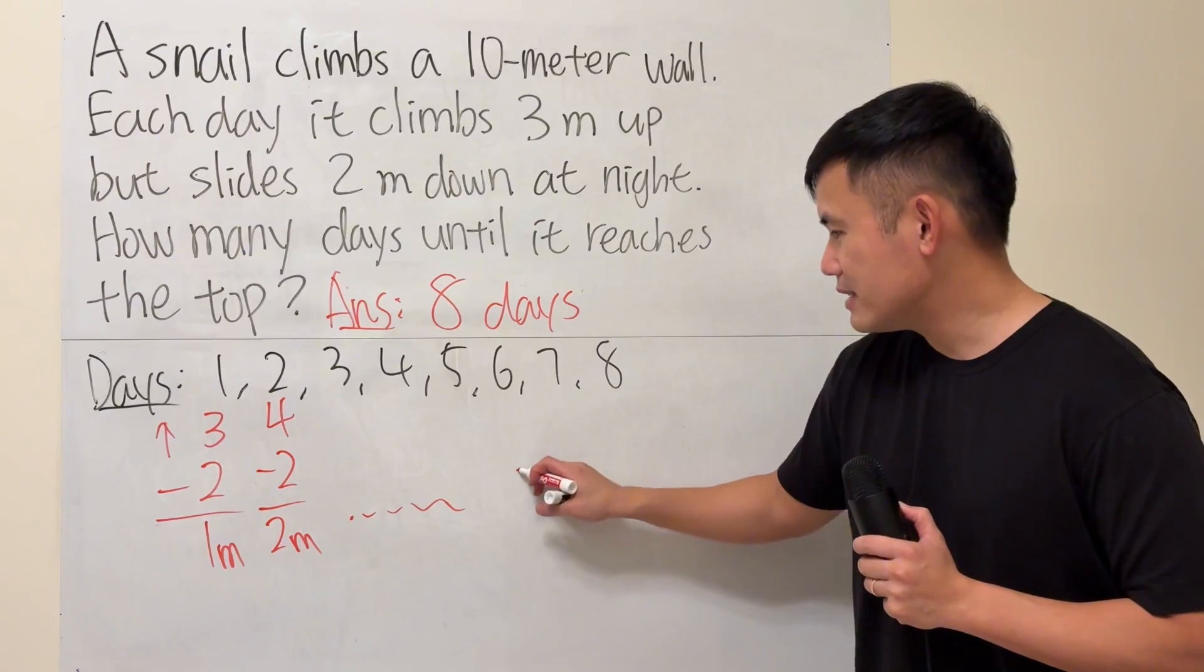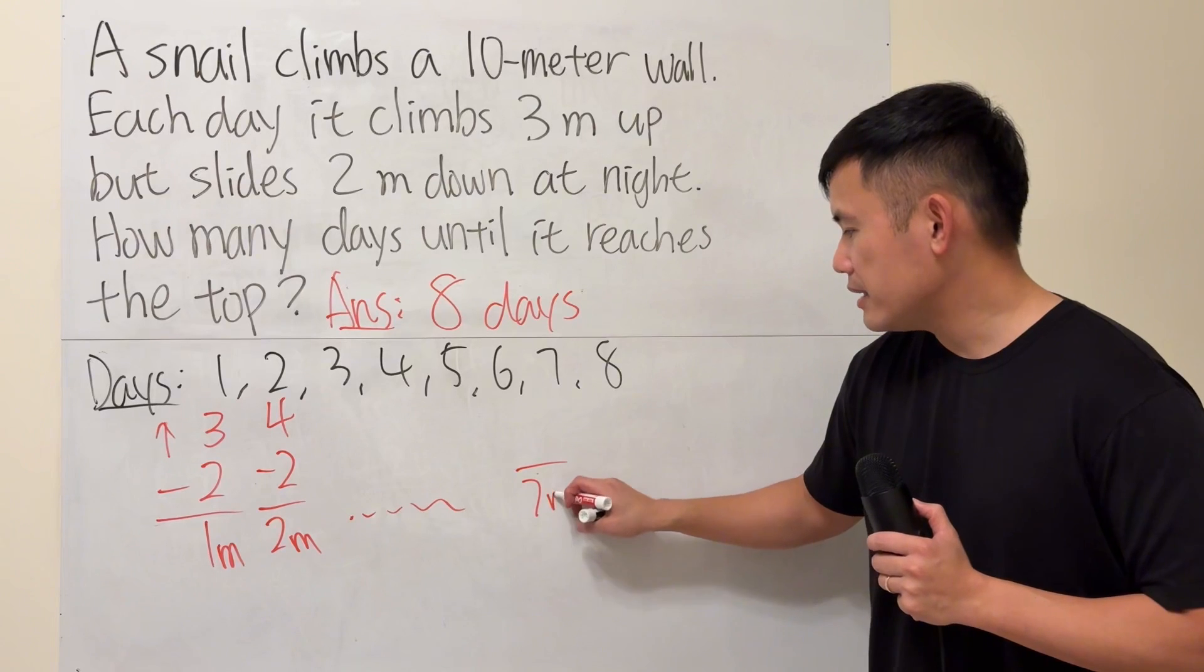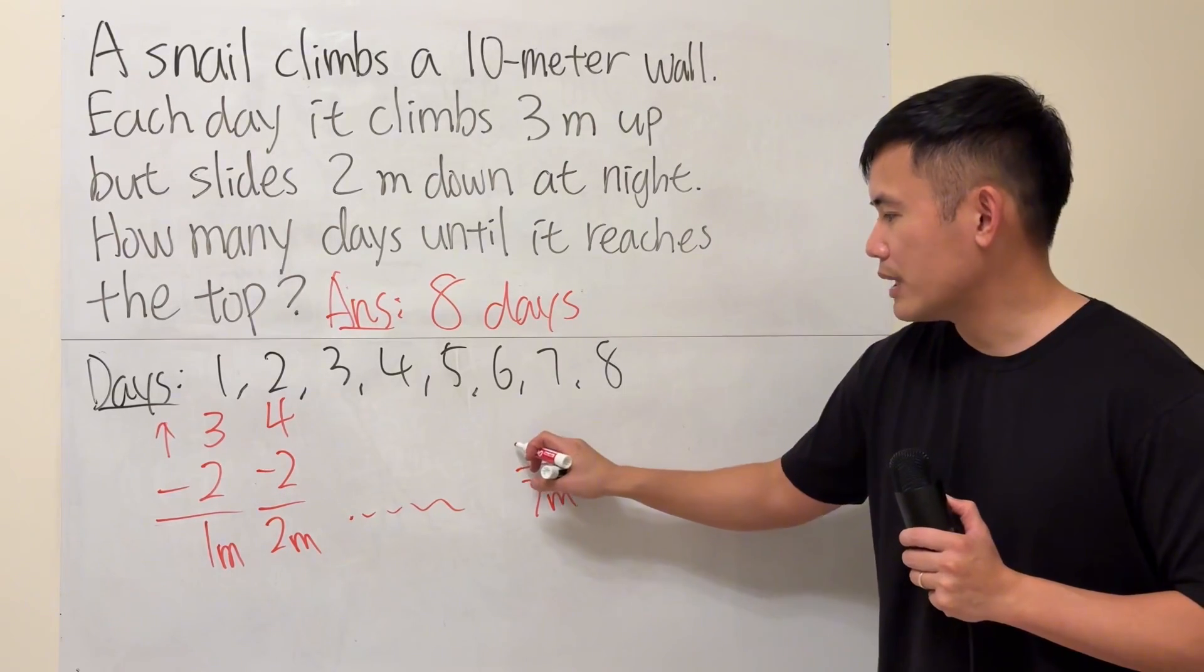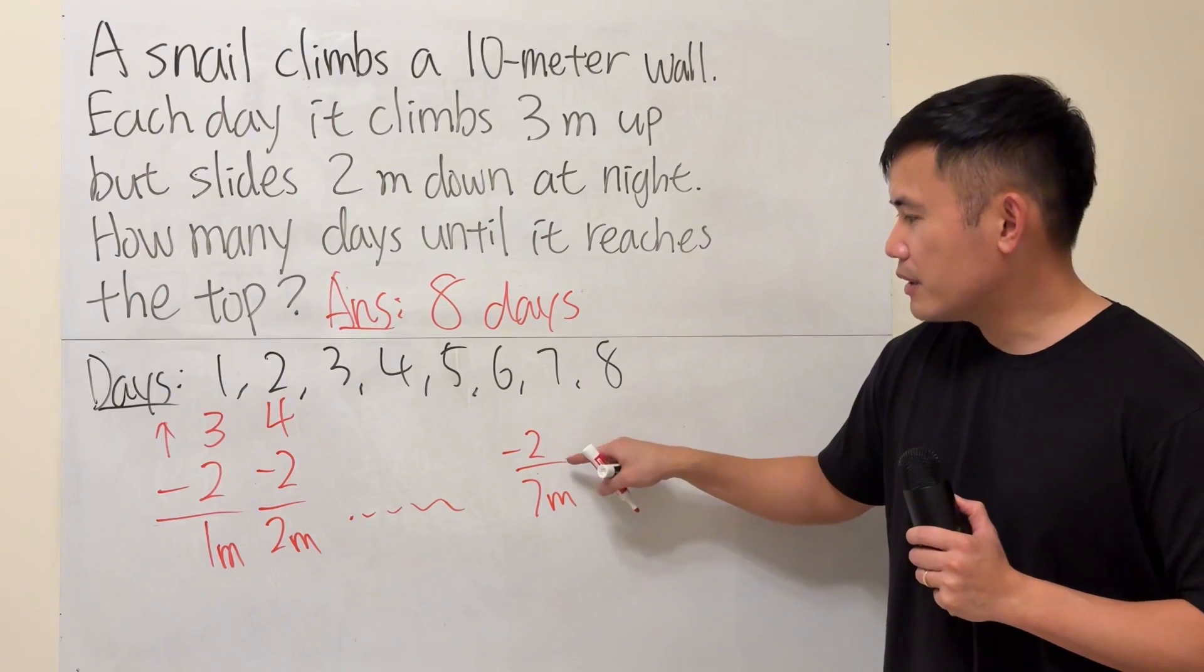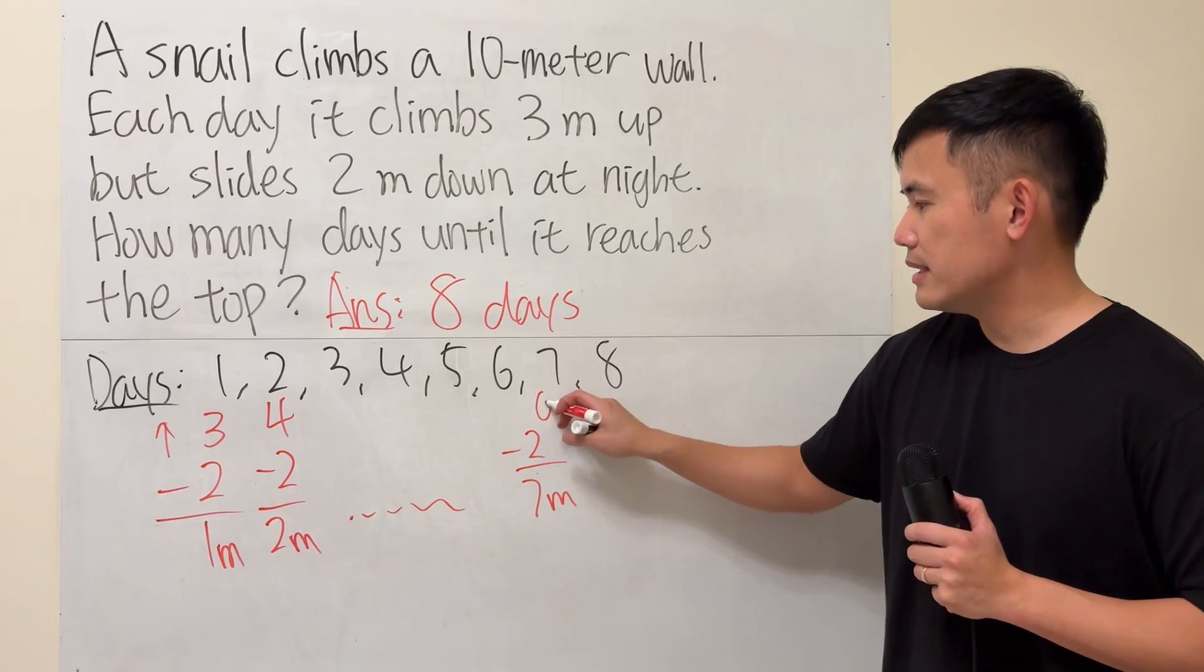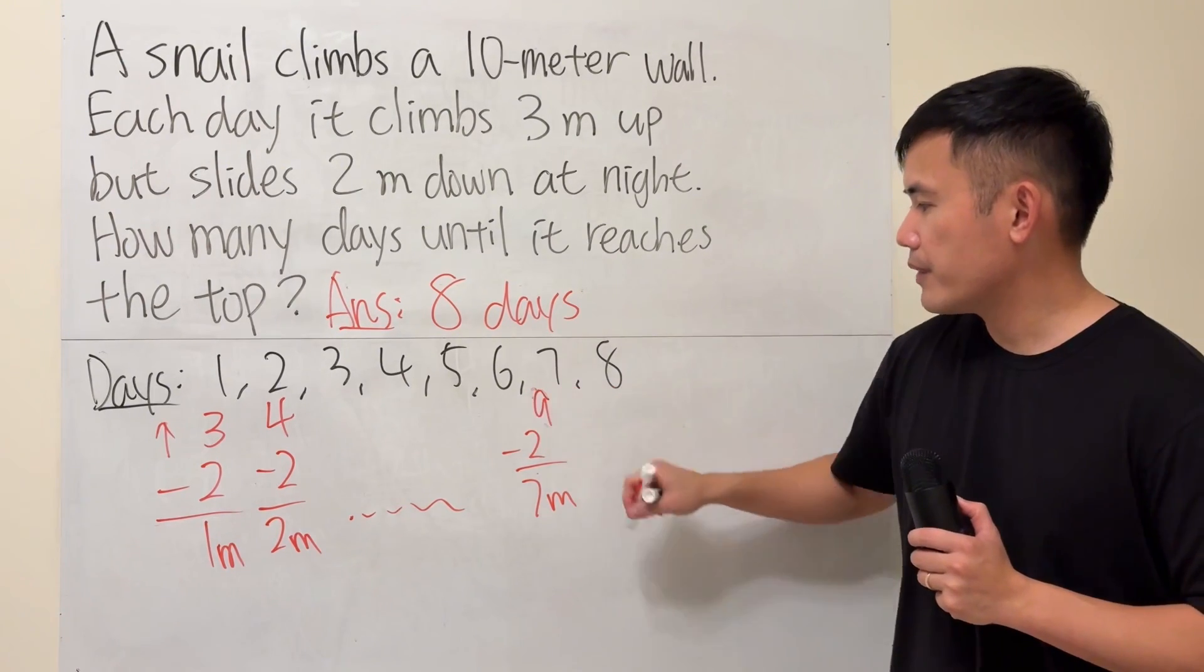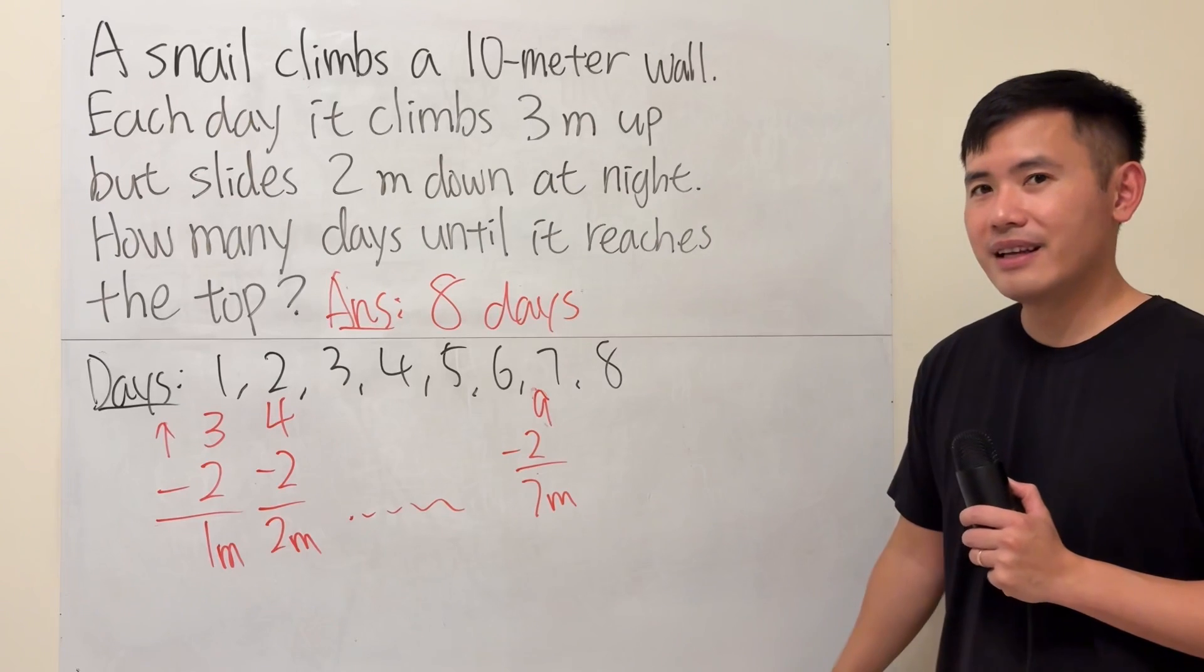Once we get to the seventh day, we will be ending up at the seventh meter mark. But remember, it was minus 2 meters. And then before that, it was what? It was the sixth. It was the ninth meter mark. Right? 9 minus 2 is 7.